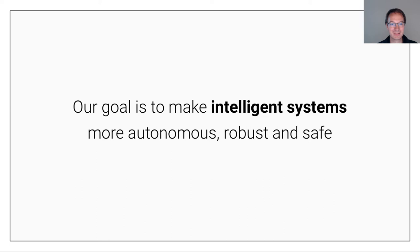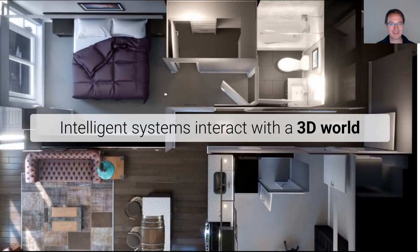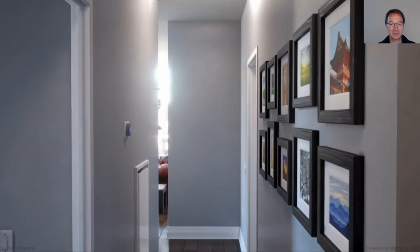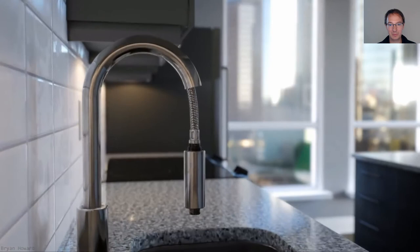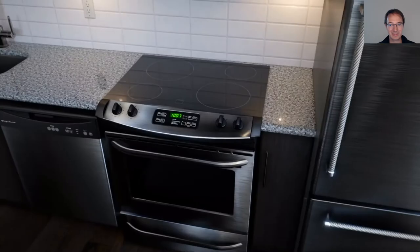My research group focuses at the intersection of robotics and computer vision. Our goal is to make intelligent systems more autonomous, robust and safe. Intelligent systems must interact with a complex 3D environment, as illustrated by this video where a robot might need to interact with an environment that has complicated geometric structure.